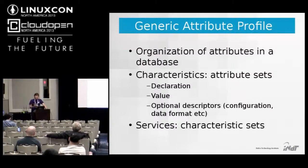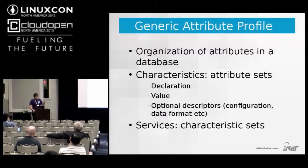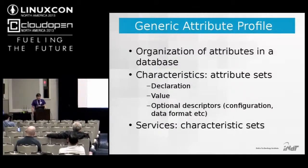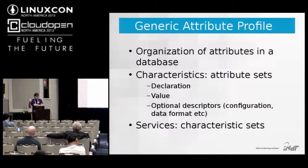The Generic Attribute Profile (GATT) uses the Attribute Protocol to organize attributes in a database. Attributes are grouped into characteristics, which have a declaration attribute containing the characteristic's UUID and access control modes, a value attribute where the actual value is stored, and optional descriptors providing metadata — for example, specifying units used in a measurement. Characteristics are then grouped into larger sets called services, defined by a specification.